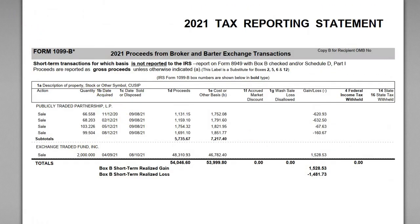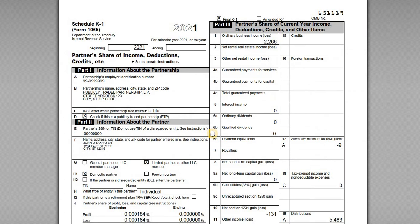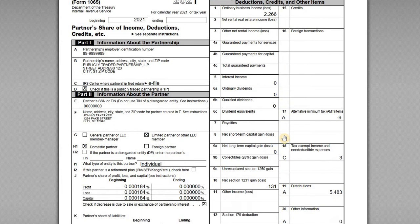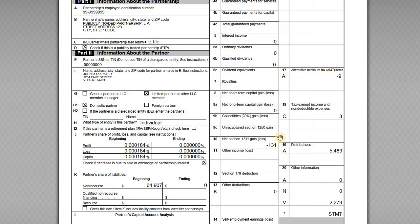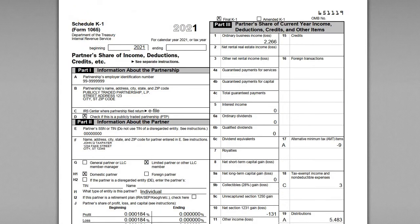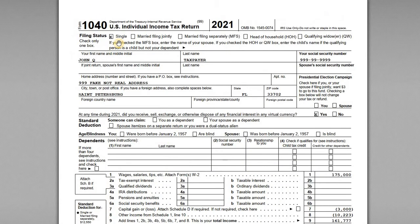In addition to the brokerage statement, we have the K-1. When you're an investor in a PTP, you should get a K-1 every year. This is the K-1 for John Q Taxpayer's final year as a unit holder — it is marked final. We do have some income and expense items we'll go into later.